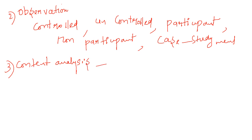Content analysis is a research technique for the objective, systematic, and quantitative description of the manifest content of communication. It is a systematic way of analyzing and describing the content of communication media. The steps in content analysis are: formulate research questions or hypothesis, define the universe, select an appropriate sample from the population, select and define a unit of analysis, construct categories, train coders, conduct a pilot study, establish a quantification system, code the content, analyze the collected data, and draw conclusions.